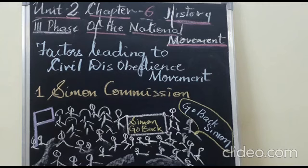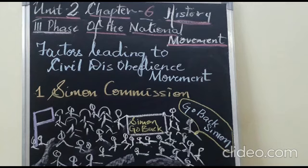The Non-Cooperation Movement mobilized public support to win freedom for India. It was a great step, though it was short-lived — it started in 1920 and concluded by 1922. Gandhiji called off the Non-Cooperation Movement because of the Chauri Chaura incident, where violence was involved, against his principle of non-violence.